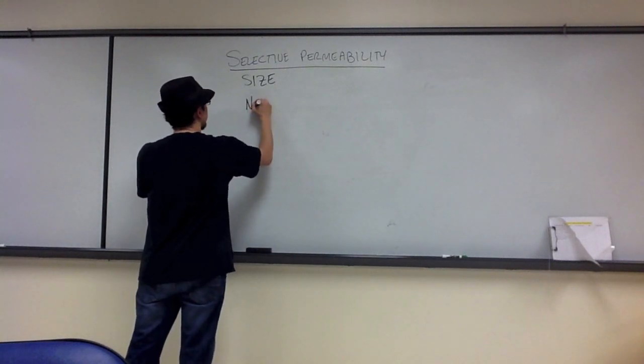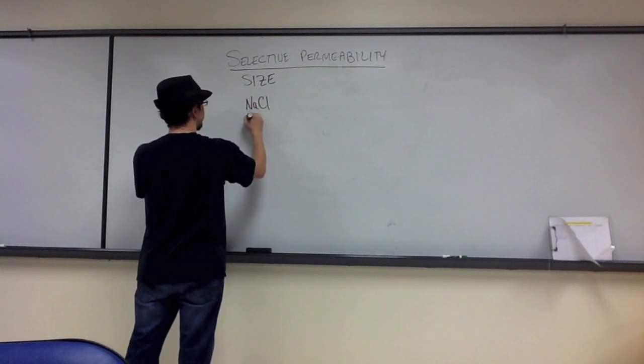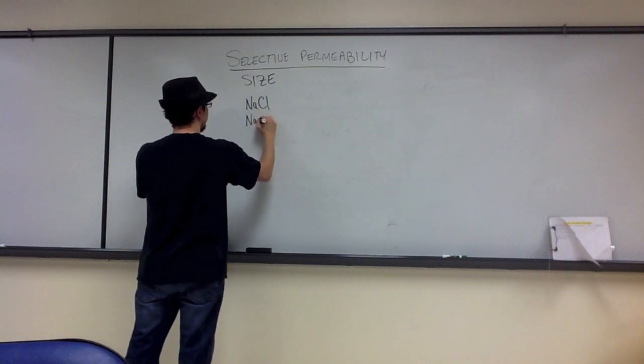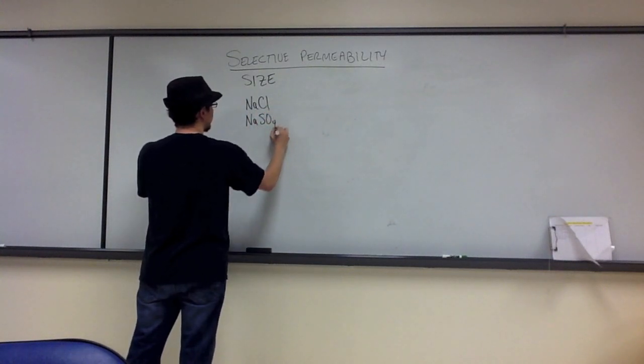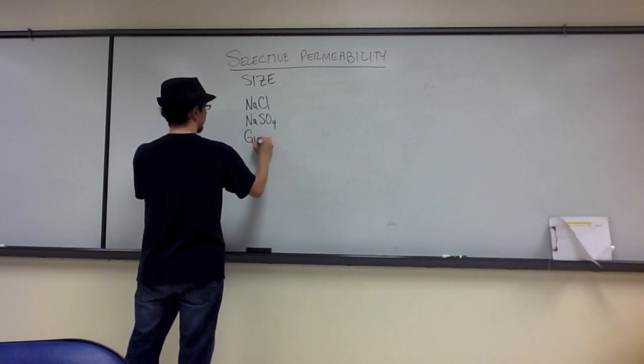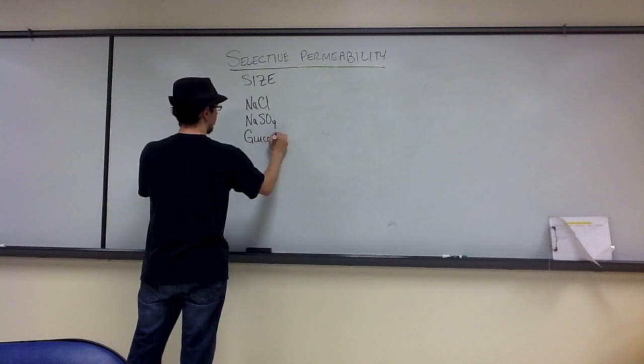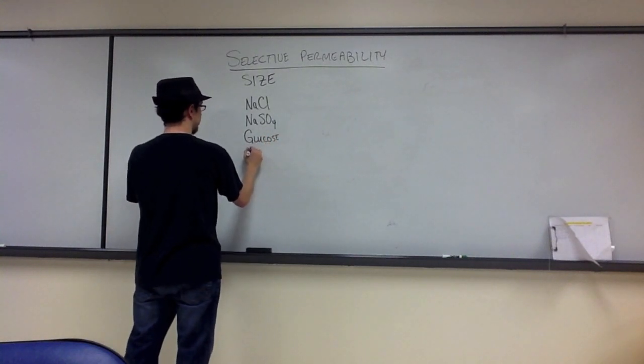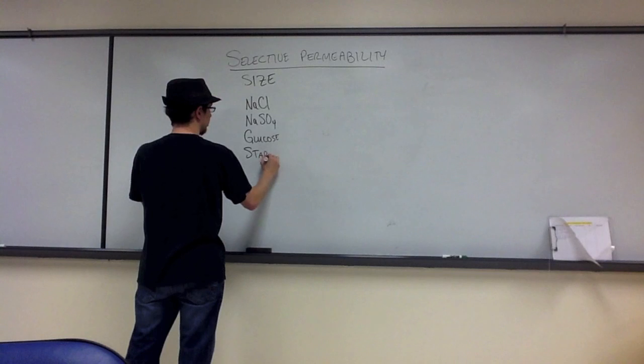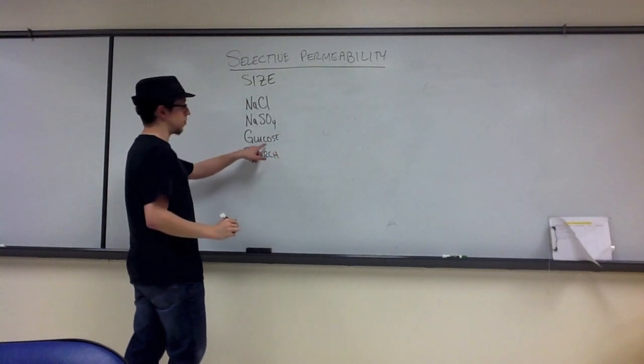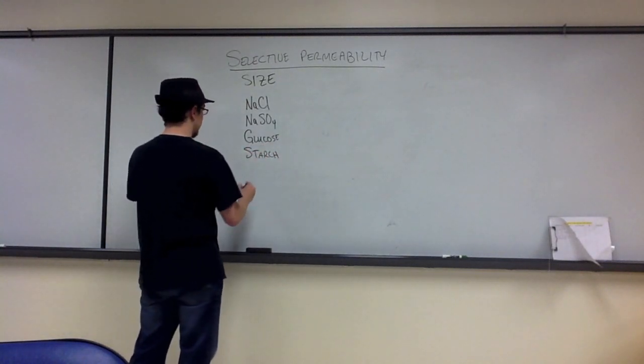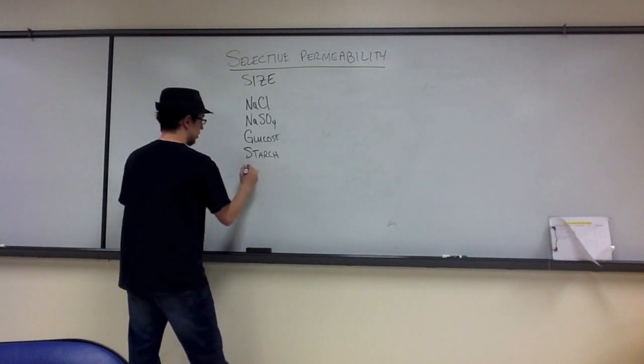You had sodium chloride, sodium sulfate, glucose, you had starch, which is a polymer built from monomers of glucose molecules, and protein.